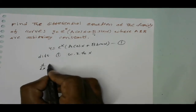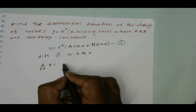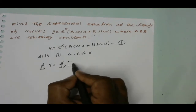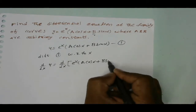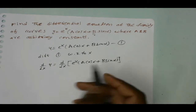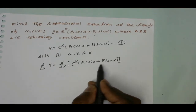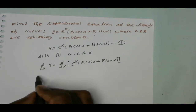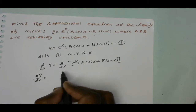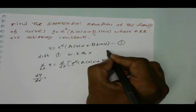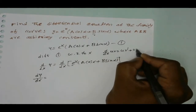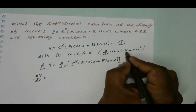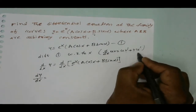Differentiating equation 1 with respect to x: d by dx of y equal to d by dx of e power x into a cos x plus b sin x. We have to apply the uv formula. dy by dx is equal to — the uv formula means d by dx of uv equal to u into v dash plus v into u dash, that is u into d by dx of v plus v into d by dx of u.